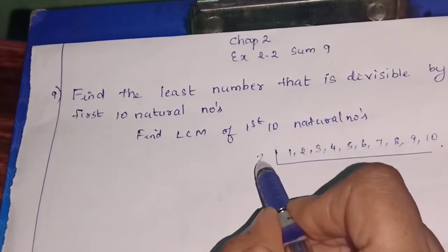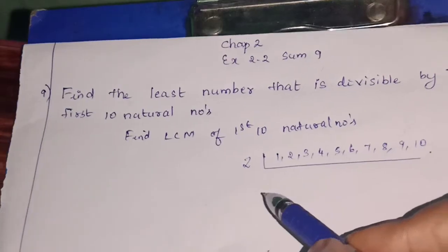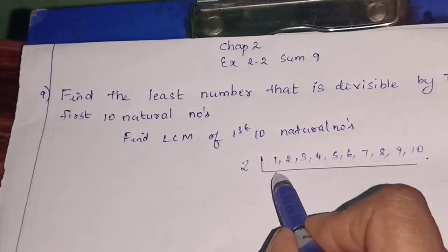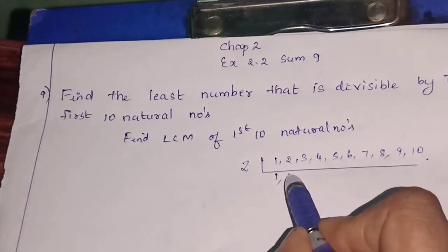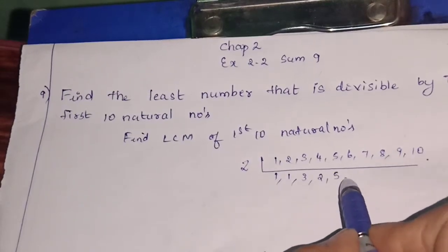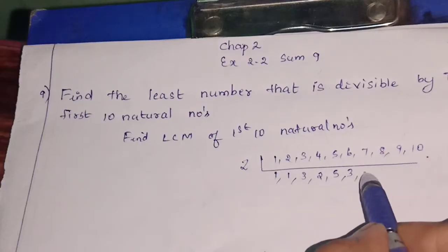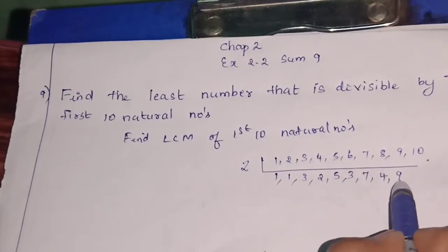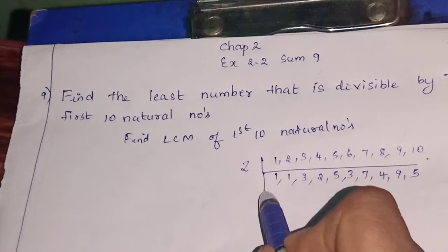First you can go with 2. You can find the LCM. 1, so 2 - 1's are 2, 3 bring it down, 2 - 2's are 4, 5 as it is, 2 - 3's are 6, 7 as it is, 2 - 4's are 8, 9 as it is, 5 - 2's are 10. Next.